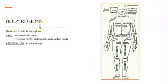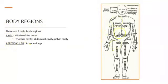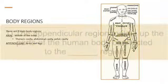The next topic is the major body regions. The one in the middle is going to be the axial, and the ones on the side are going to be the appendicular. In the axial region, you have the thoracic cavity, abdominal cavity, and pelvic cavity.